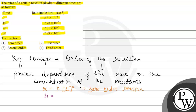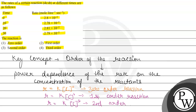For first order of reaction, it can be written as rate equals rate constant multiplied by concentration raised to power 1, which shows the rate is linearly dependent on concentration. For second order reaction, rate equals rate constant multiplied by concentration raised to power 2, which shows that if you double the concentration, the rate becomes 4 times; if concentration is 4 times, the rate becomes 16 times.